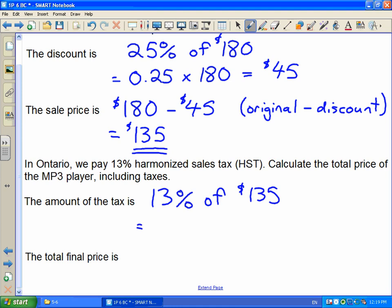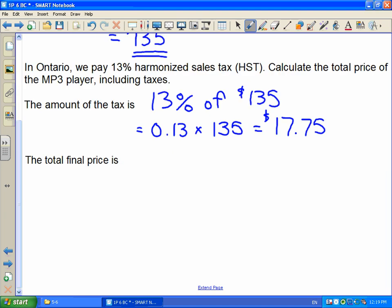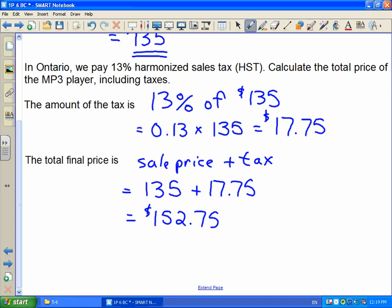To do that, we change our percent to a decimal and multiply. We punch this into our calculator and get $17.75. That's how much tax is going to be on top of the sale price. What is the total amount we're going to pay? It's our sale price plus our tax, because the tax gets added on. Our sale price was $135, we add on our $17.75 sales tax, and we end up with $152.75. That is our total final price.